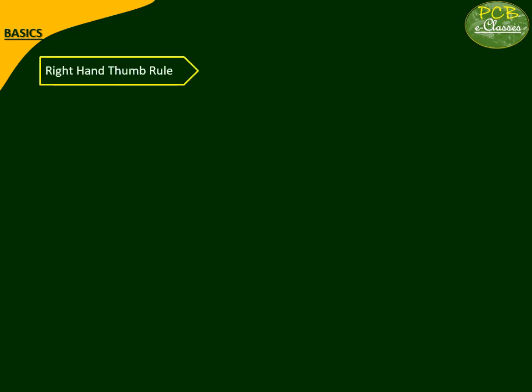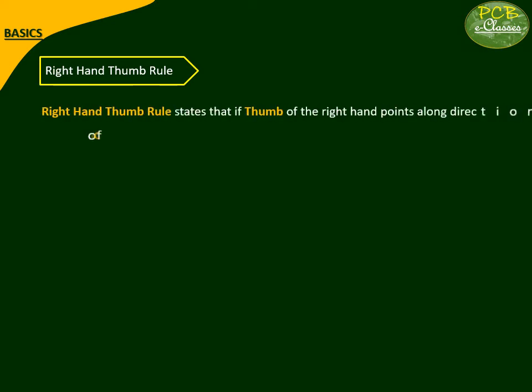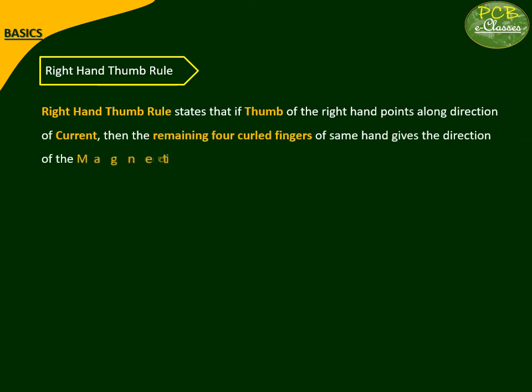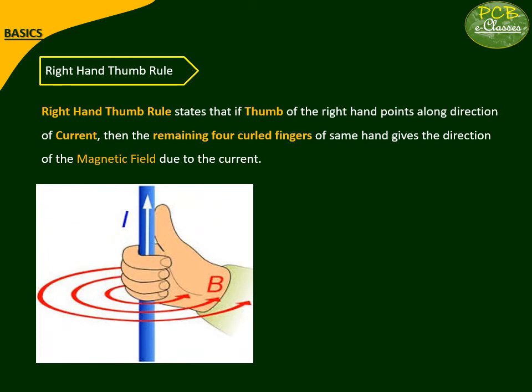Moving to the next one: the Right Hand Thumb Rule. It states that if the thumb of the right hand points along the direction of the current, then the remaining four curled fingers of the same hand give the direction of the magnetic field due to that current. We can see from the figure: the blue conductor has the current direction indicated by the white arrow. Along the current direction, we keep the thumb, and the other four curled fingers give the direction of the magnetic field. If the current direction is upward, then the magnetic field direction is anticlockwise.